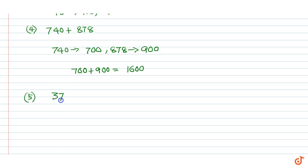Example 5: 370 plus 288. 370 rounds up to 400, 288 rounds up to 300. Therefore 400 plus 300 equal to 700.